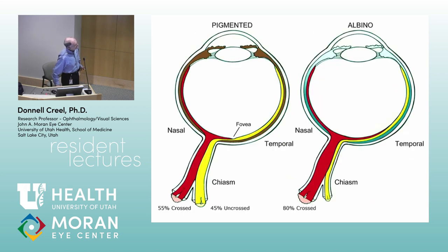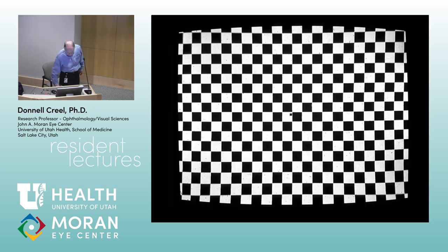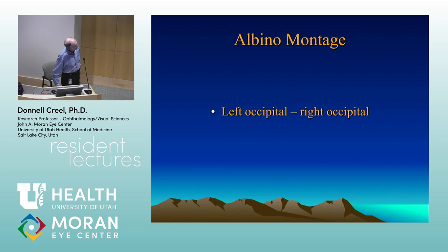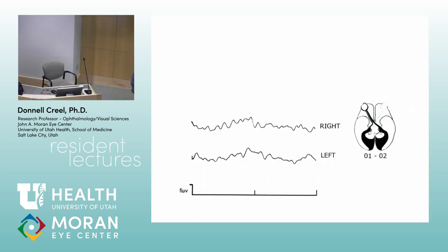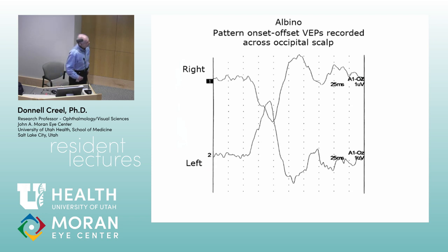Reviewing the dorsolateral geniculate and the difference in projection: if you record across the occipital scalp in one of us and change from right eye to left eye stimulation, you get a polarity that is roughly similar whether you stimulate the right or left eye. But in albinos, because up to 90% or more cross, when you stimulate the right eye all the potential goes to one side, and when you stimulate the other eye all the potential goes to the other side. The polarity completely flips 180 degrees.